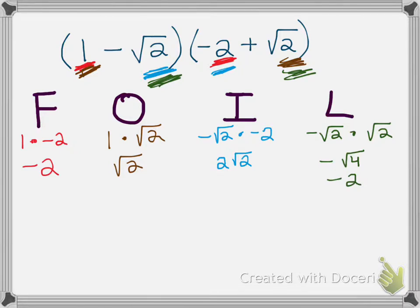Now looking at everything that I got from the F, O, I, and the L, I'm going to combine like terms if I can. So I'm just going to add whatever like terms I can add together. Alright, so as you can see I can definitely add negative 2 plus negative 2, which gives me negative 4.